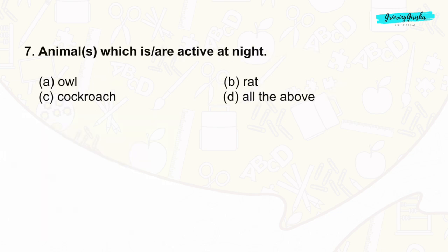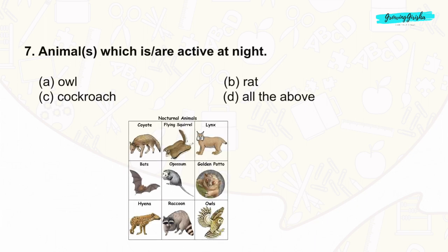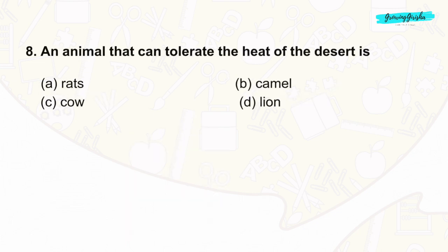Question 7: Animals which are active at night are called nocturnal animals. Examples of nocturnal animals are owl, rat, and cockroach. The correct answer is option D: all of these.